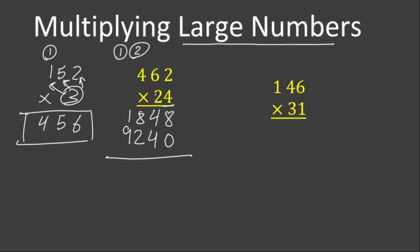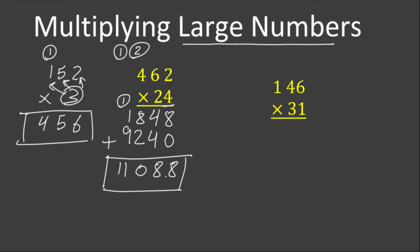Once we get the product of the two digits multiplied by all the numbers at the top, we add them to get the final product. 8 plus 0 is 8. 4 plus 4 is 8. 8 plus 2 is 10 — write 0 and carry 1. 1 plus 9 is 10, plus 1 is 11. The final product we get is eleven thousand eighty-eight.